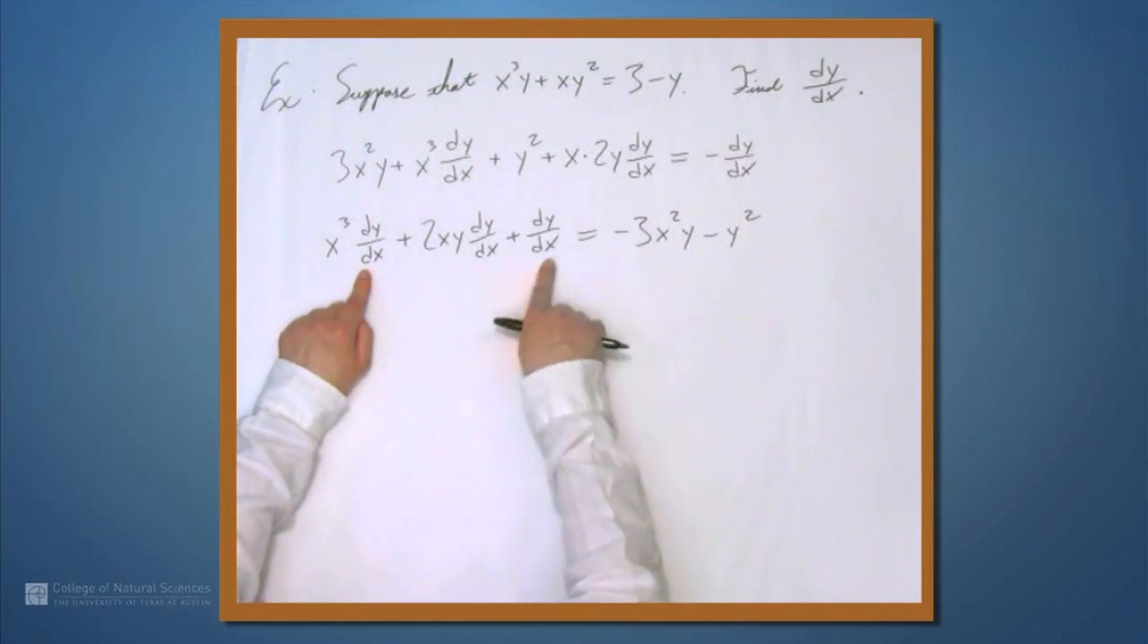So we factor a dy/dx out of each term on the left, and we're left with x³ + 2xy + 1 equals this thing on the right. So when we divide by that quantity, we get (-3x²y - y²)/(x³ + 2xy + 1), and that's dy/dx.